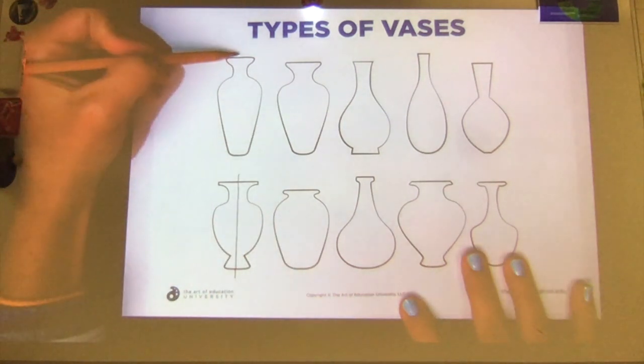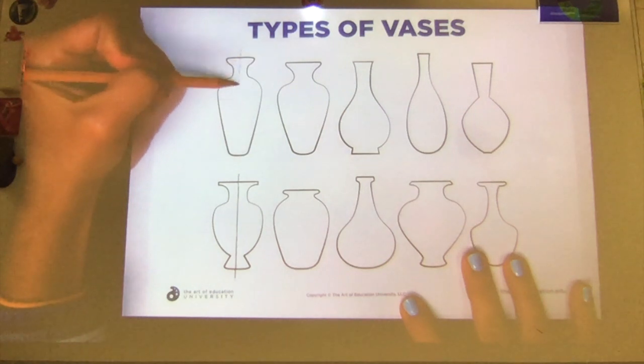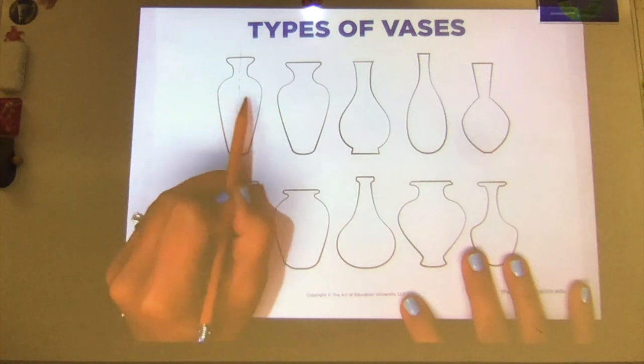Same with this one up here. If we were to draw a dotted line through that vase, we can see that it's the same on both sides.